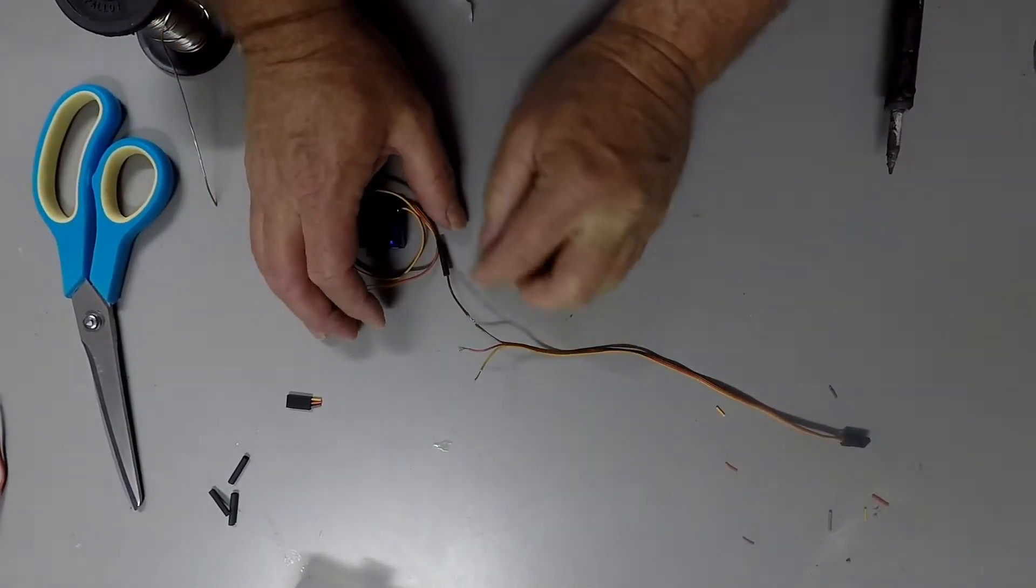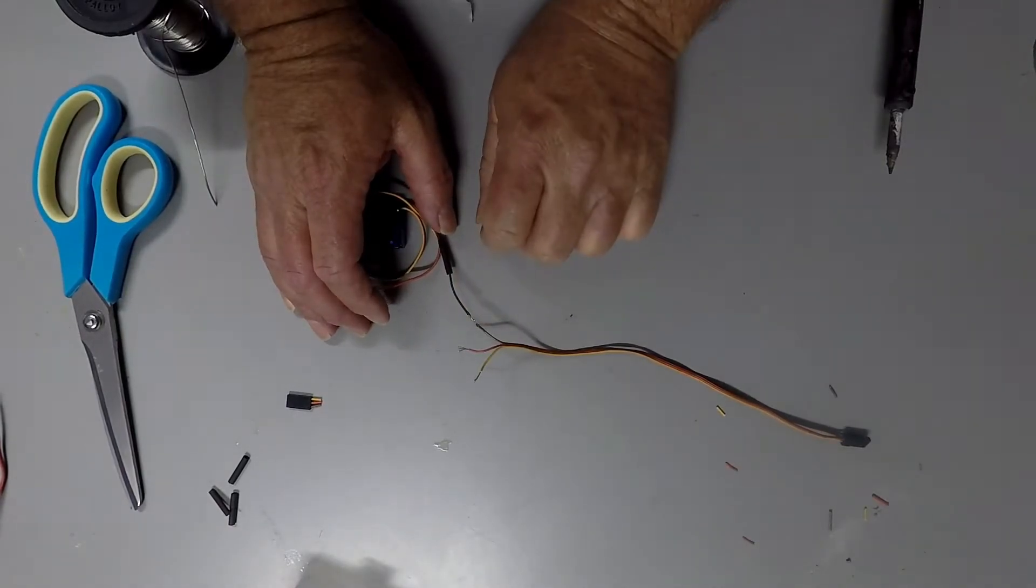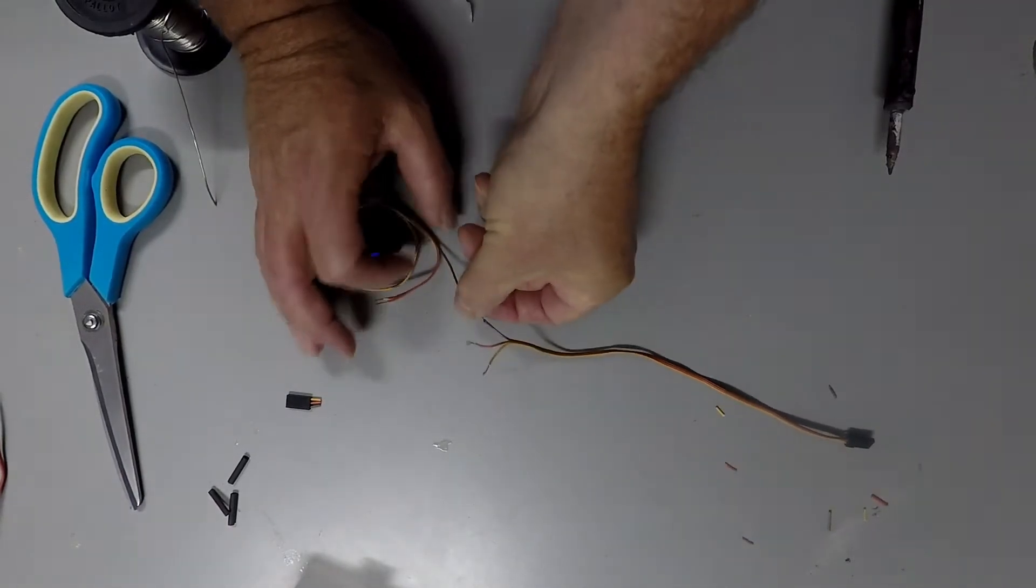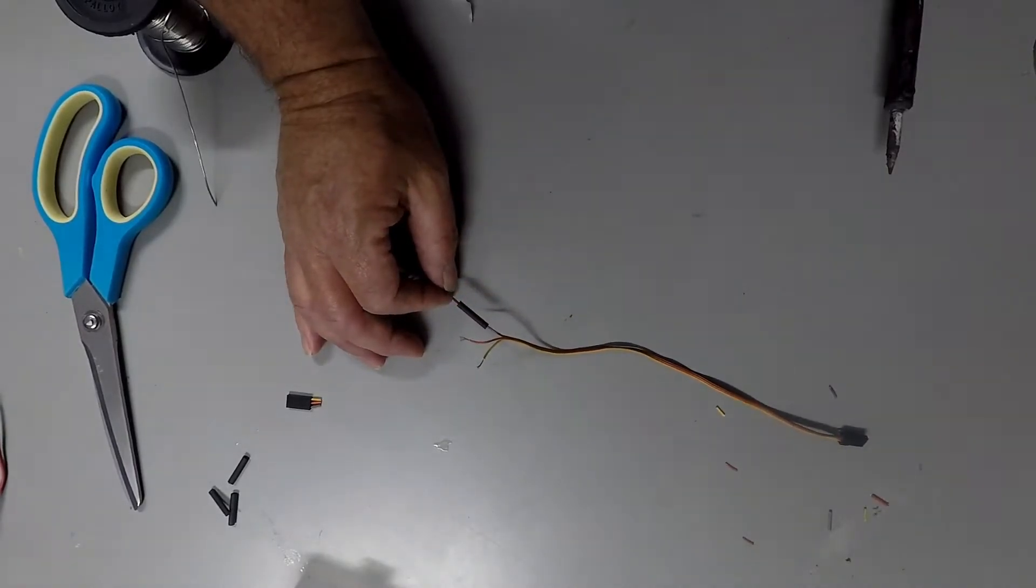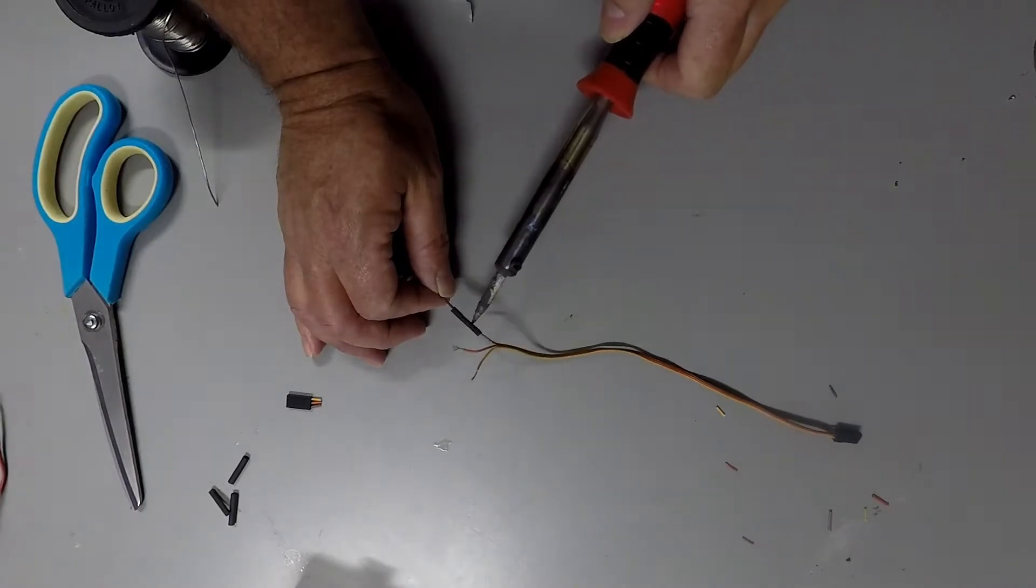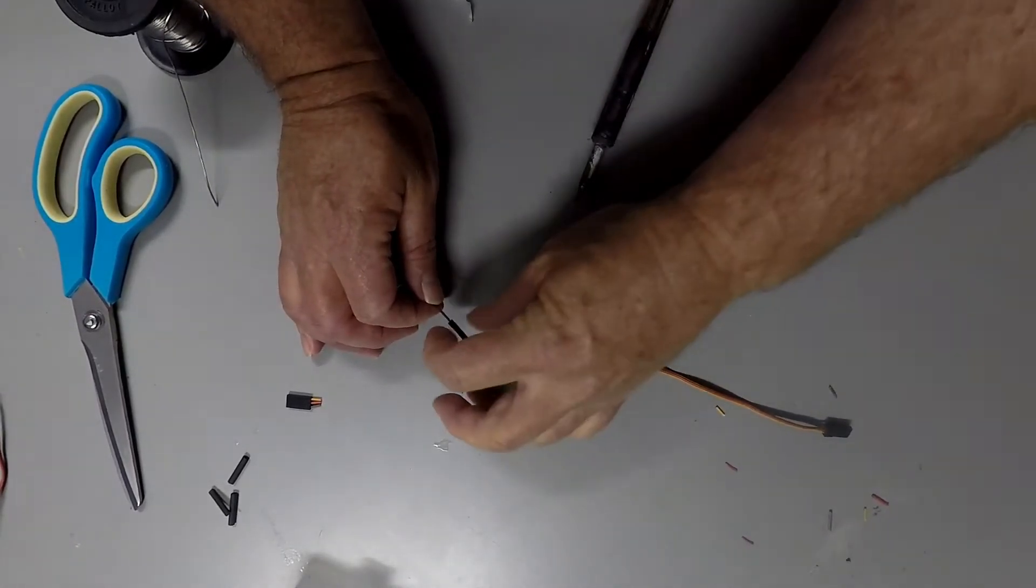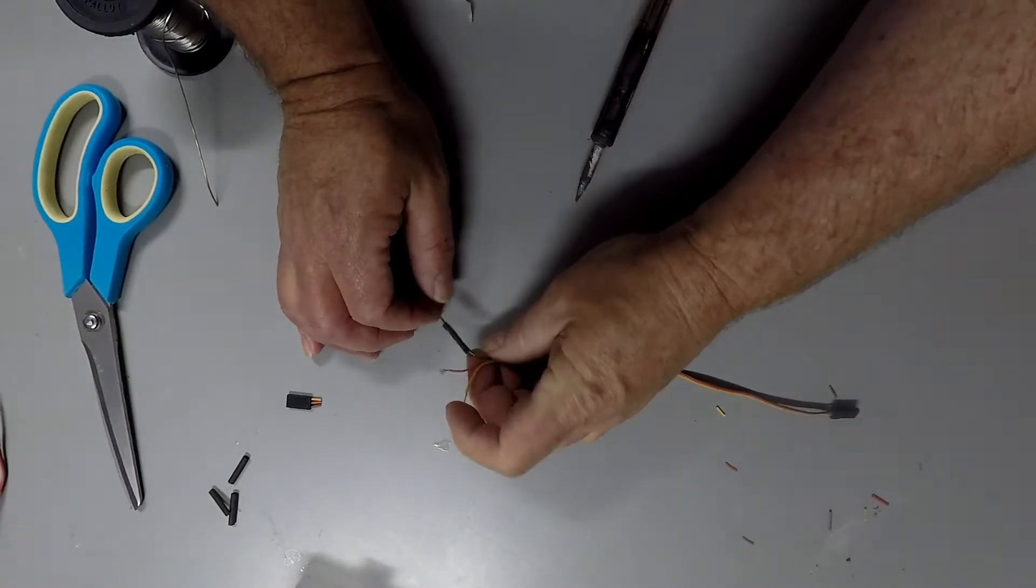What you want to be careful of is not to melt the sheath of the wire too much as well. Then I can just slide my heat shrink over. I don't have a heat gun, but I'm not going to use it today. I'll just use my soldering iron. Make sure it's kind of clean. Because the last thing you want is to be depositing a whole stack of molten metal on that either.